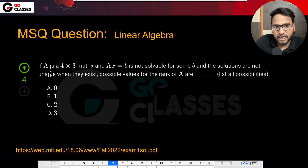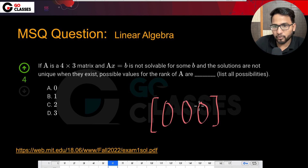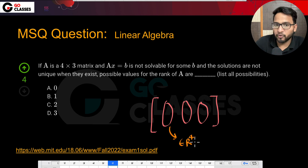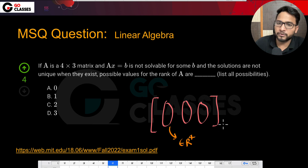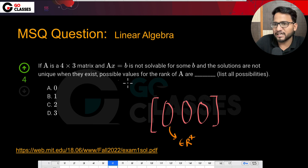So now let's see this question. They are saying if A is a 4×3 matrix and Ax=B is not solvable for some B. A 4×3 matrix means there are 4 rows and 3 columns. Since there are 3 columns and 4 rows, every column will be in R4. They are saying it is not possible to solve for every B, which is trivial — these are just 3 vectors in R4, so there must be some B for which you have no solution.